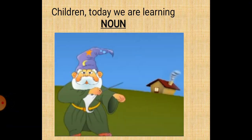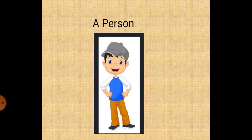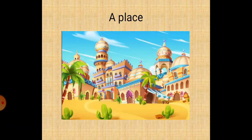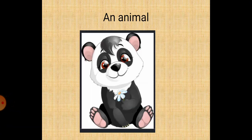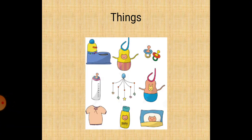Children, today we are learning noun. Naming words are called noun. Children, everything around us has a name. So, nouns are the names of a person, place, animal, or a thing.